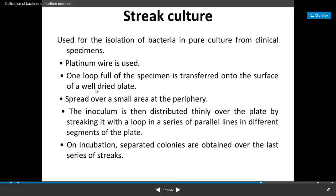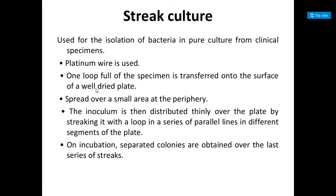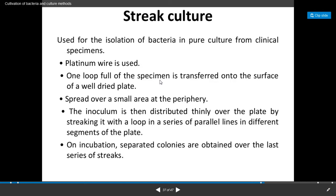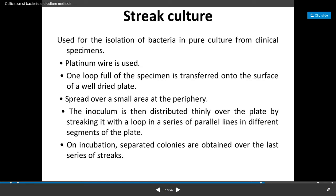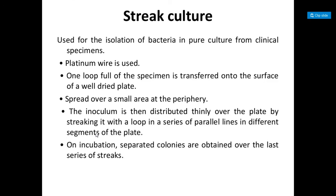The streak culture technique is useful for the isolation of bacteria in pure form or in pure culture from a clinical specimen. Here there is a use of a nichrome wire loop or platinum wire loop, but more commonly the nichrome wire loop is used. One loopful of the specimen is transferred onto the surface of a well-dried plate consisting of nutrient medium and spread over a small area at the periphery. The inoculum is then distributed thinly over the plate by streaking with the nichrome wire loop in a series of parallel lines in different segments of the plate. After incubation, separated colonies appear over the last series of streaks.